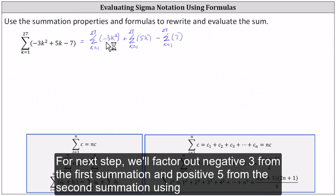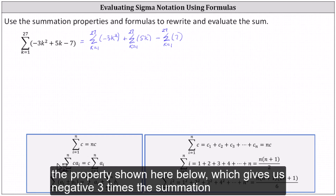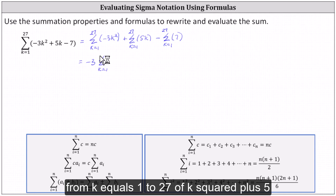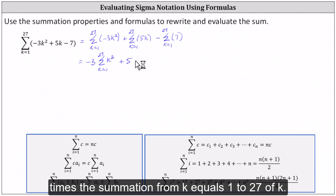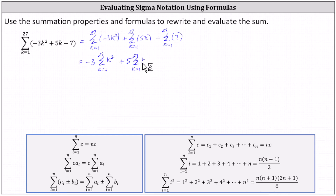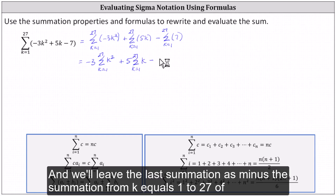For the next step, we'll factor out negative three from the first summation and positive five from the second summation using the constant multiple property, which gives us negative three times the summation from k equals one to 27 of k squared, plus five times the summation from k equals one to 27 of k, and we'll leave the last summation as minus the summation from k equals one to 27 of seven.